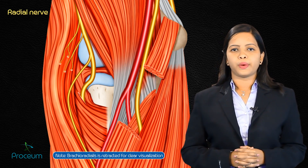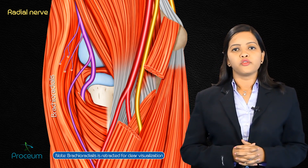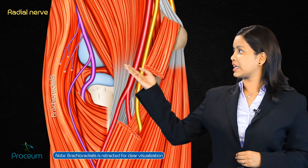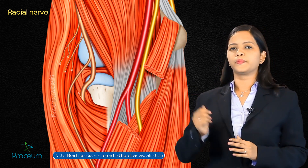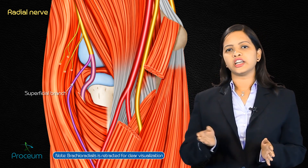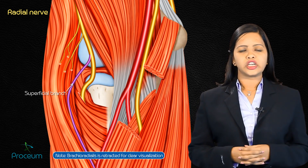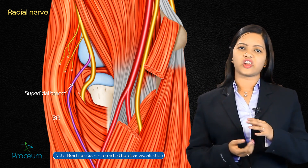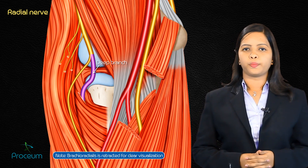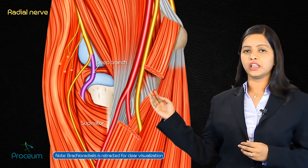The radial nerve passes underneath the brachioradialis muscle, which forms the lateral margin of the fossa. As seen in the diagram, it divides into a superficial branch and a deep branch. The superficial branch continues into the forearm deep to the brachioradialis muscle.